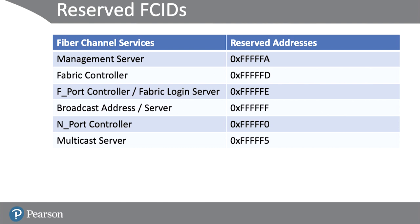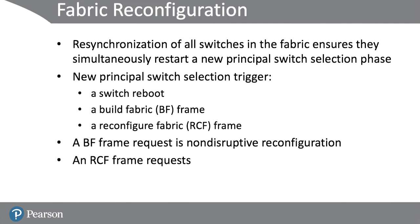During fabric reconfiguration, resynchronization of all switches in the fabric happens so they simultaneously restart to enter a new principle switch selection phase. A new principle switch selection can be triggered by a switch reboot, a Build Fabric frame (BF frame), or a Reconfigure Fabric frame (RCF frame). A BF frame is non-disruptive, whereas an RCF frame is disruptive. An RCF frame can be initiated manually or automatically if a switch is isolated, though most fabric switches have the automatic option disabled.